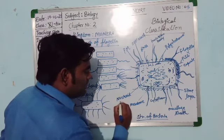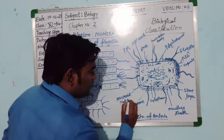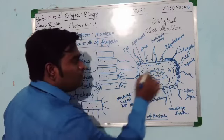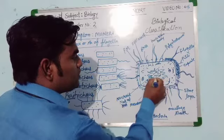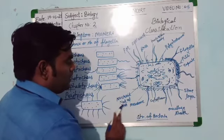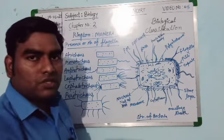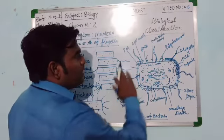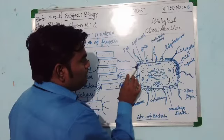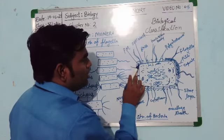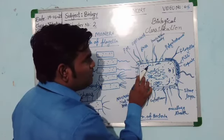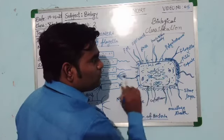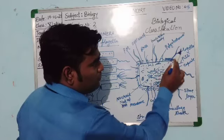The nucleoid is naked DNA without any nuclear membrane or nuclear structure. In the structure of the bacteria you can see the plasma membrane, cell wall, RNA, inclusion body, polyribosomes, and ribosomes present.